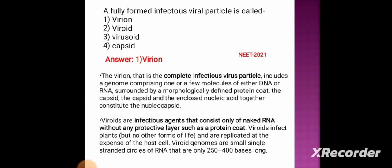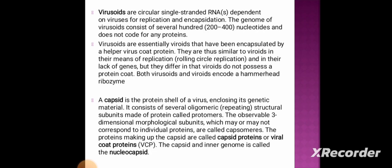Viroids are infectious agents consisting of only naked RNA without any protective protein coat. They infect plants and are replicated at the expense of host cells. Viroid genomes are small single-stranded circular RNA, only 250 to 400 bases long. Virusoids are circular single-stranded RNA dependent on viruses for replication and encapsulation. The genome of a virusoid consists of several hundred nucleotides and does not code for any proteins. Both virusoids and viroids encode a hammerhead ribozyme.